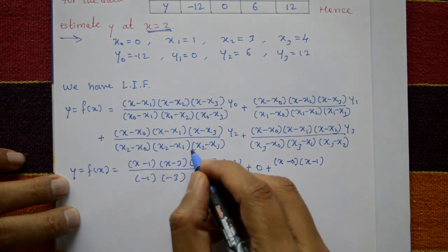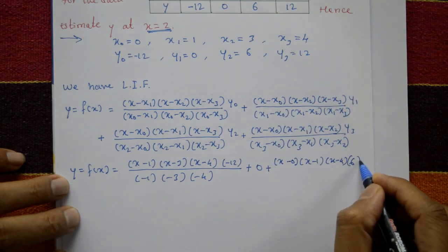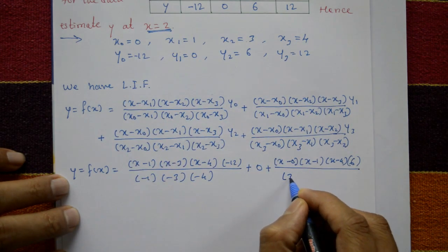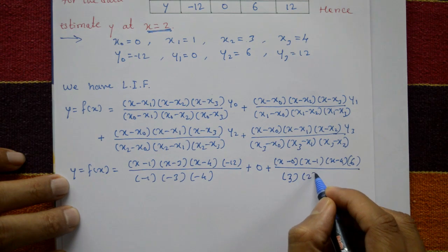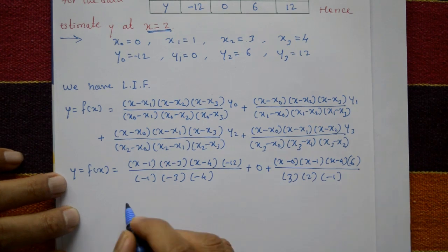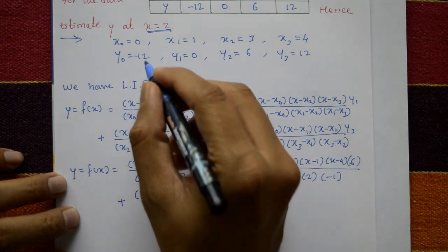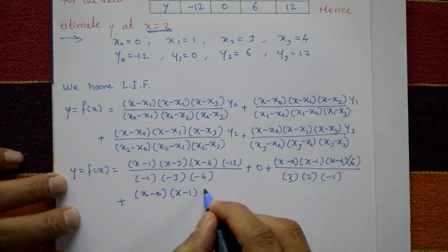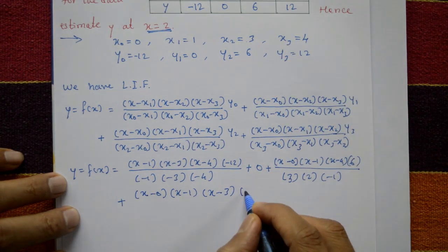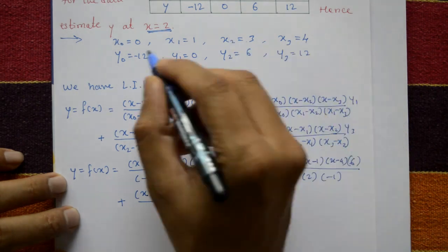For the third term: (x minus x naught) is x, (x minus x1) is (x minus 1), (x minus x3) is (x minus 4), times y2 which is 6, divided by x2 minus x naught which is 3, x2 minus x1 which is 2, x2 minus x3 which is minus 1. Plus the fourth term: (x minus x naught)(x minus x1)(x minus x2) times y3 which is 12, divided by x3 minus x naught which is 4.